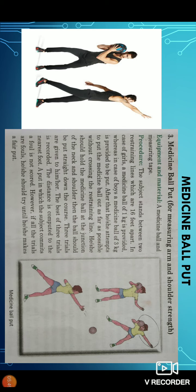Procedure: The subject stands between two restraining lines which are 16 feet apart. In case of girls, a medicine ball of 1 kg, for boys 3 kg. After that, he or she attempts to put the medicine ball out as far as possible without crossing the restraining line.